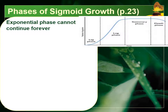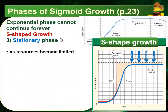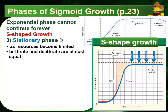The exponential growth phase can't continue forever, because eventually we will start to run out of certain resources — there will always be some type of limiting factor. We then enter the S-shape part of our growth, which adds the stationary phase and the death phase. During the stationary phase, because resources are becoming limited, the birth rate starts to slow down significantly. Eventually the birth rate and death rate become about equal — for every baby born, an older individual dies — so the change in population is very small.